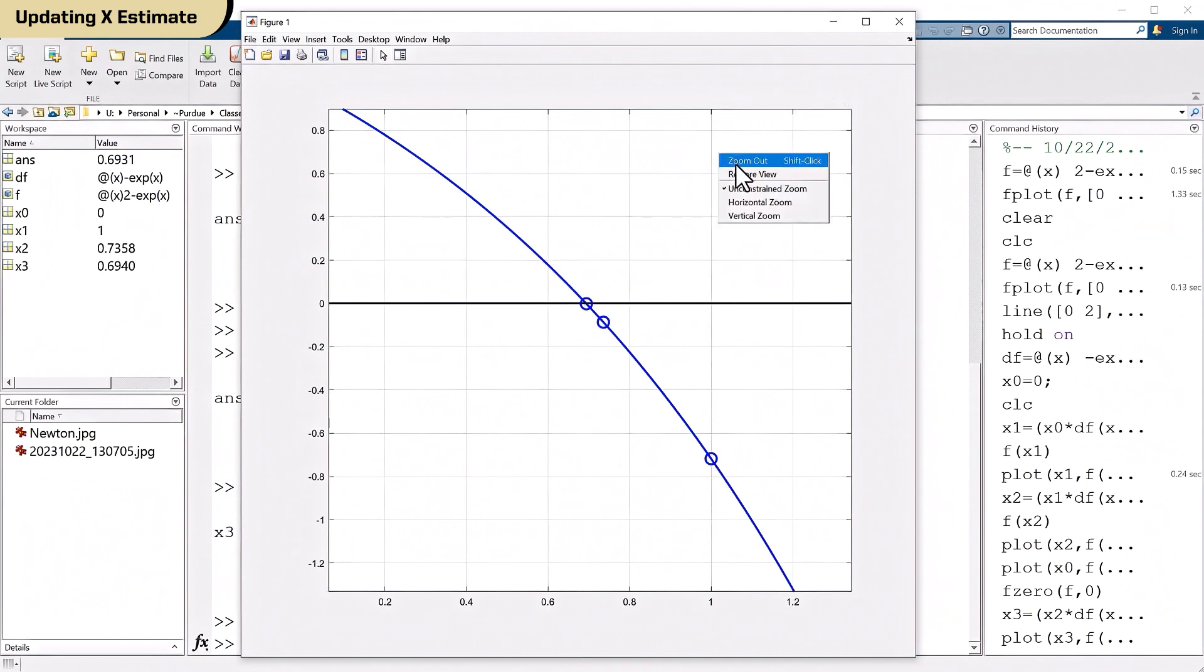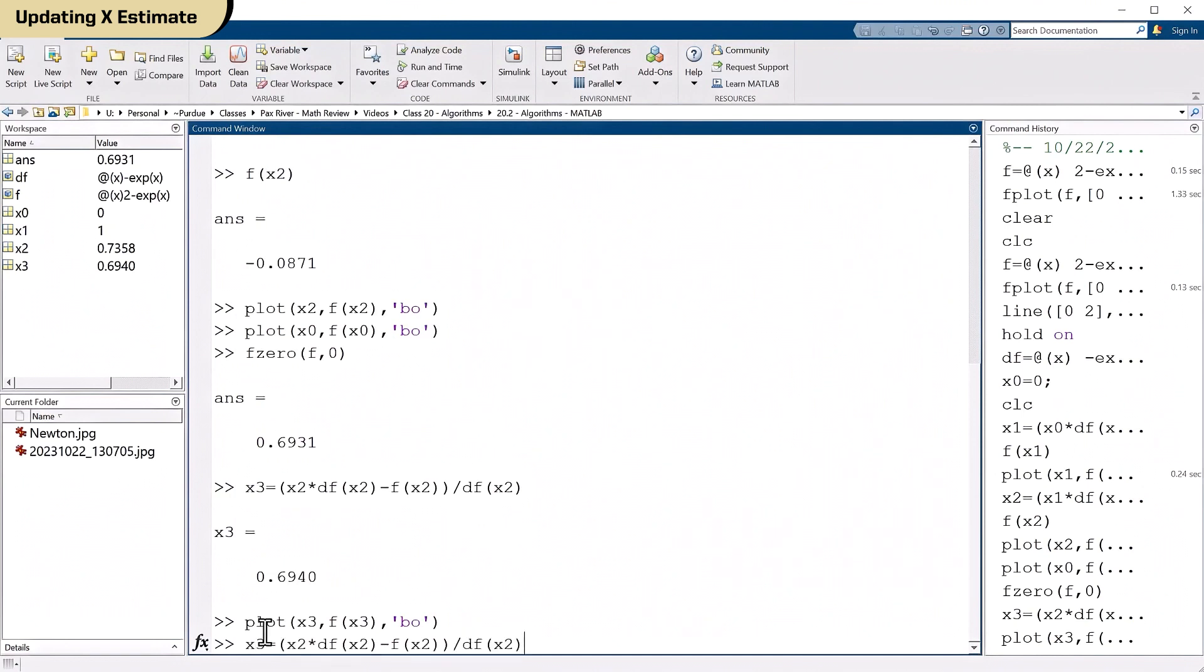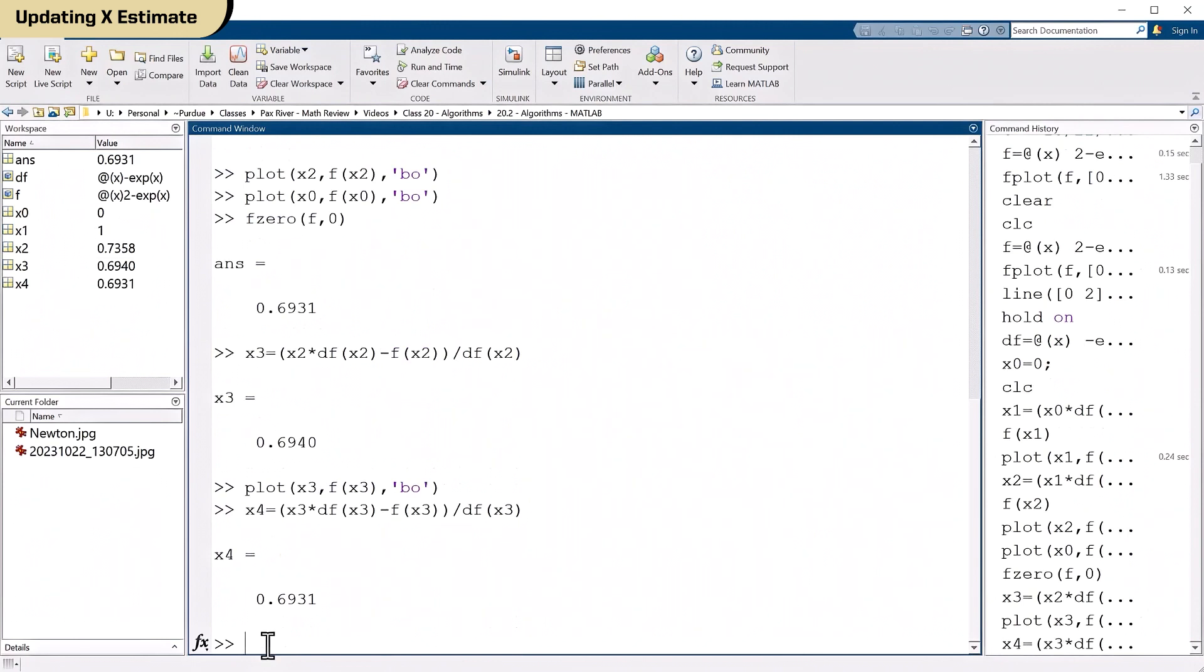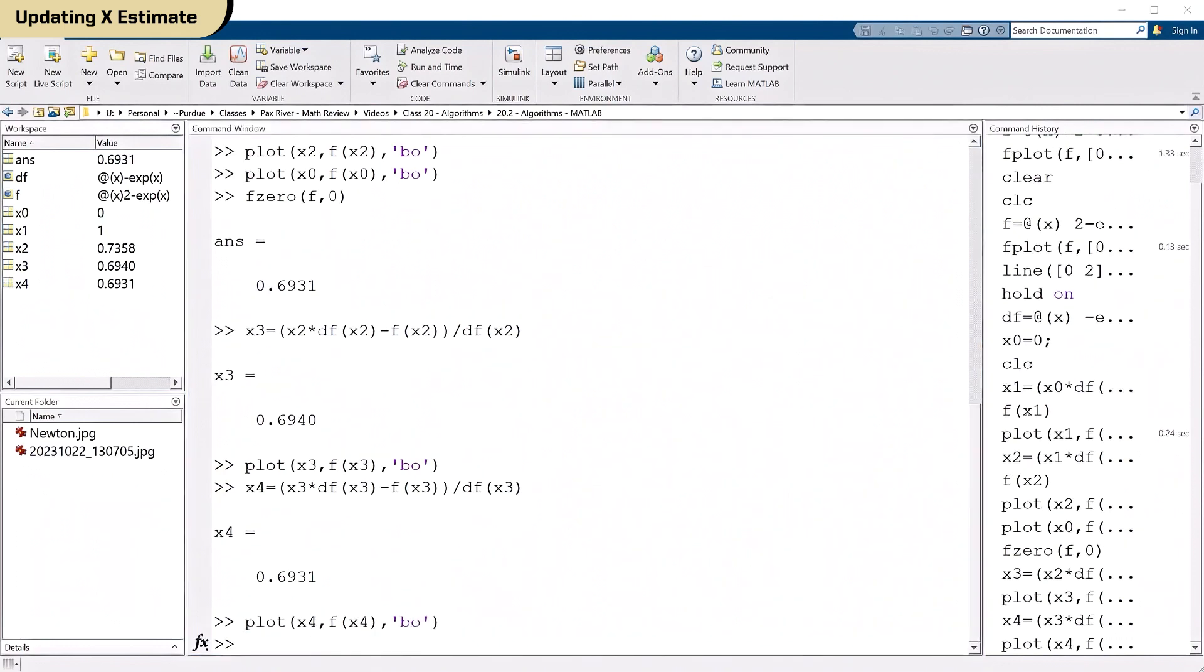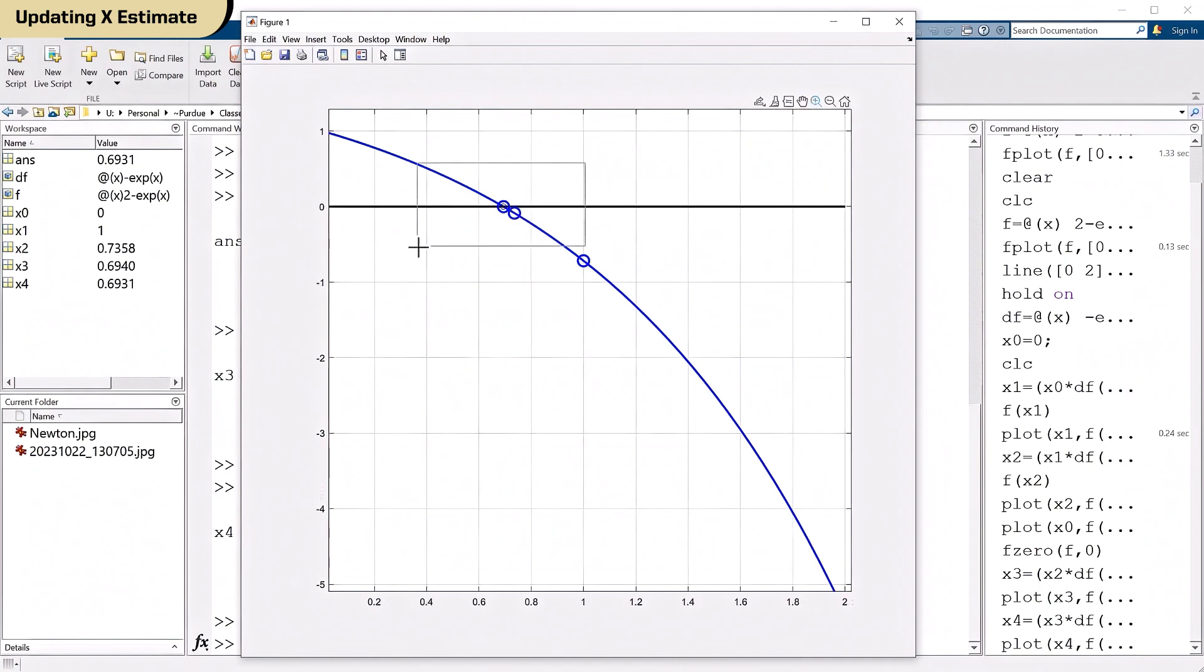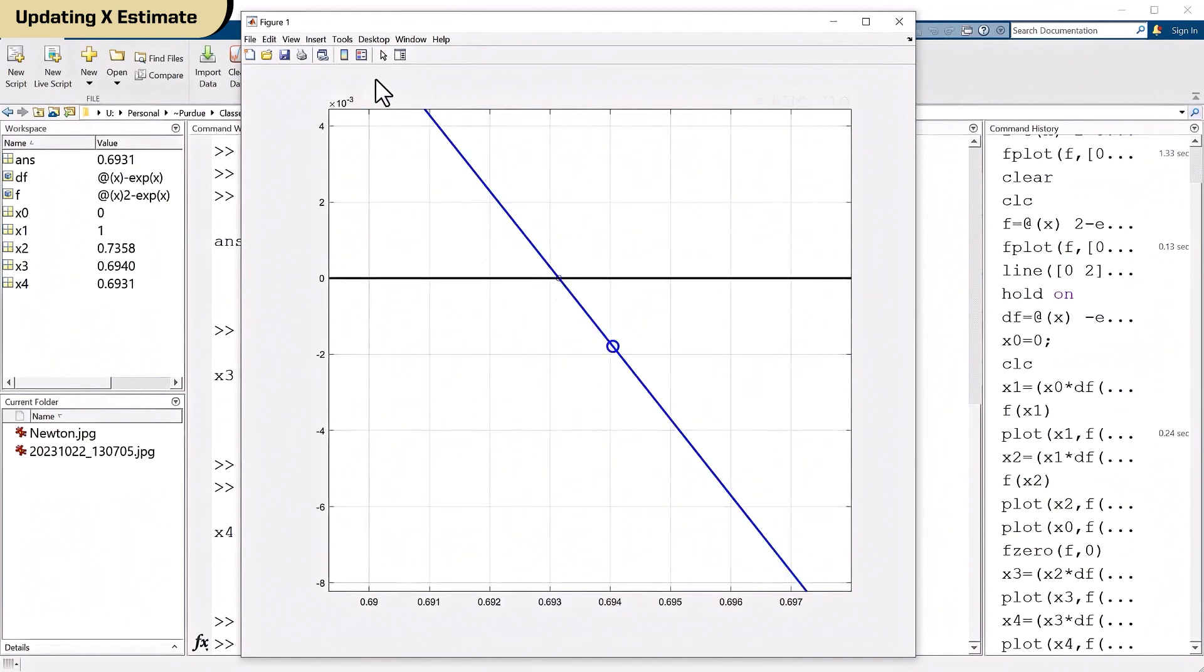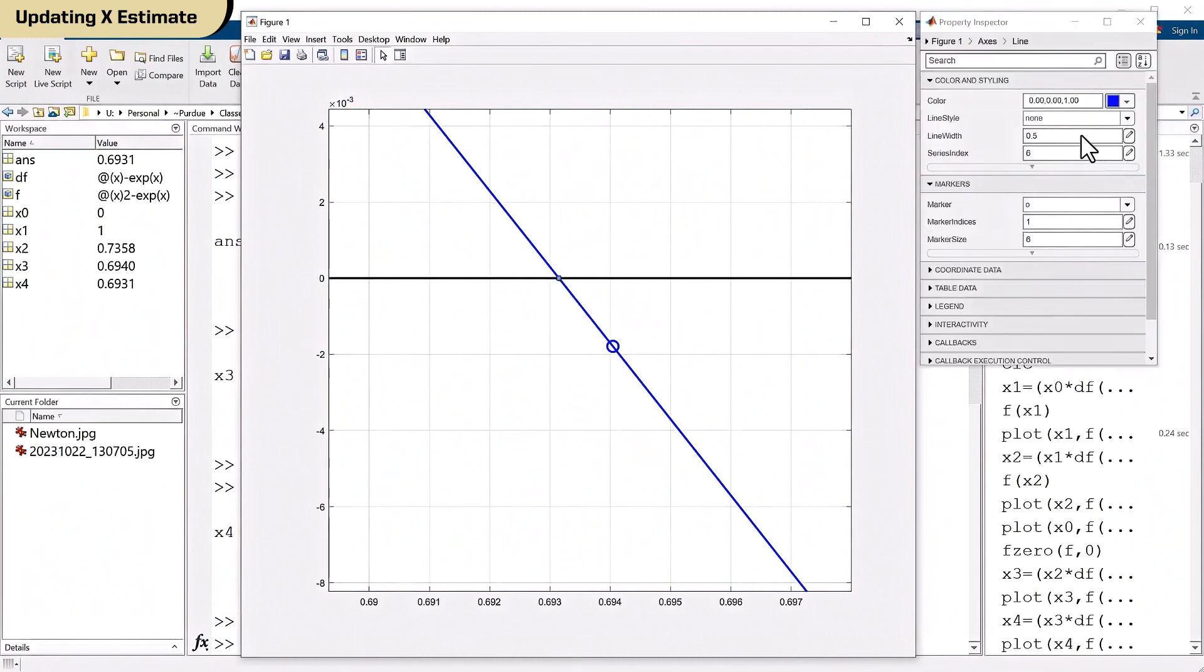That's real good news. So there it is. We're awfully close. I'm going to zoom out here. Well, do you want to do one more? Let's do one more. It's been working so well. Let's do one more estimate here. One more update using Newton's method. Well, look at that. 6931. So we agree with fzero to within four decimal places. My guess is that's probably good enough, certainly for our purposes here.